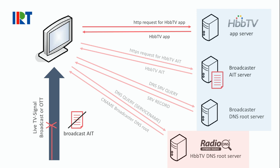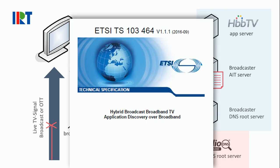So in the end, the HbbTV application discovery over broadband specification defines a way how HbbTV applications can be launched even in environments where the live broadcast or OTT signals are not able to carry the regular AIT information.